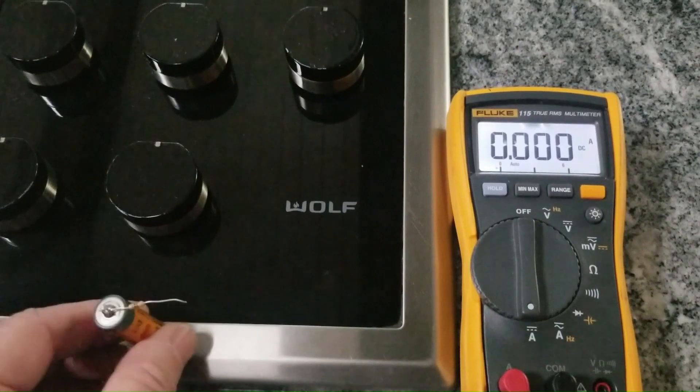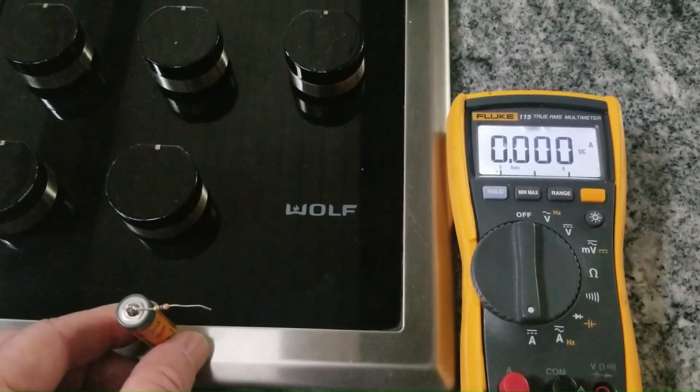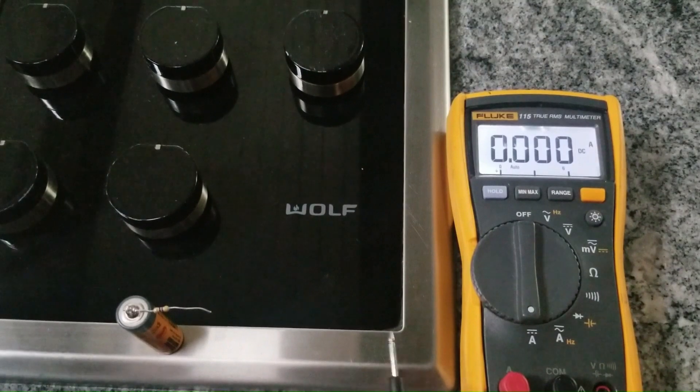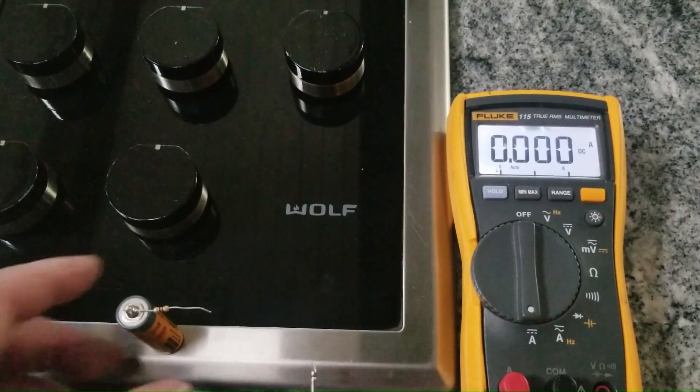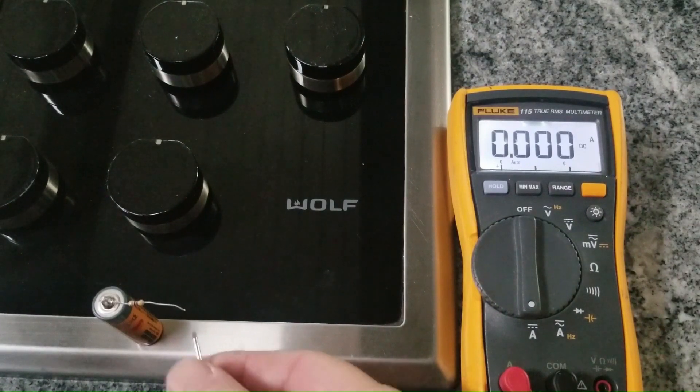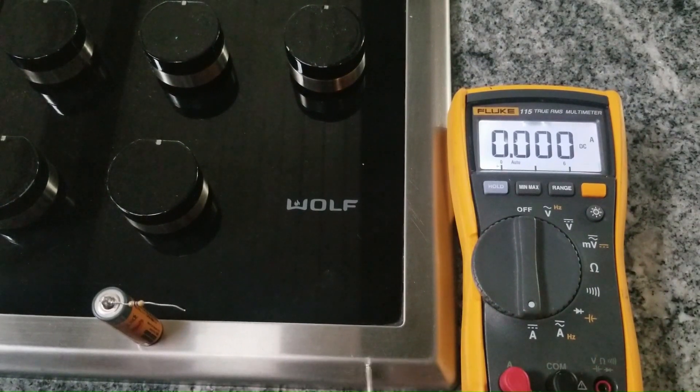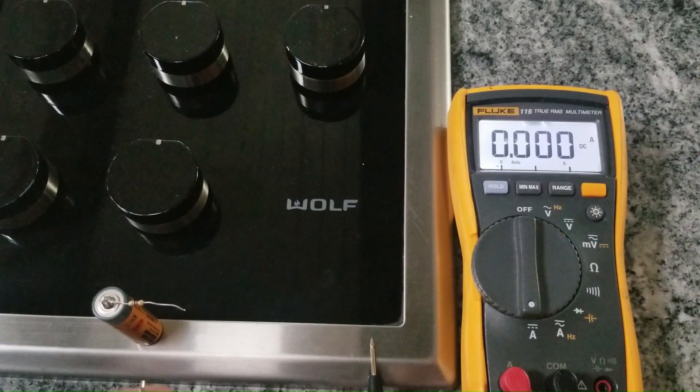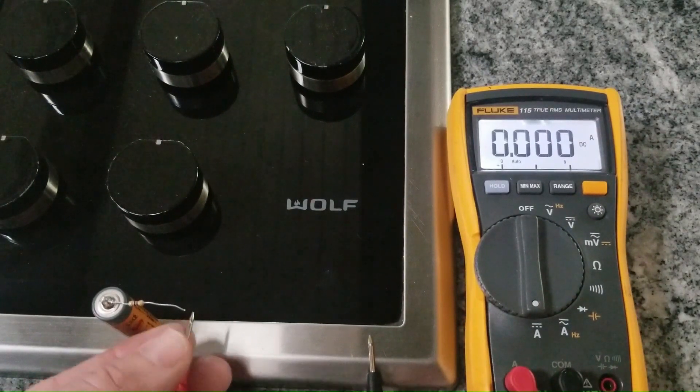Instead, I'm placing this battery on the chassis of a cooktop that is connected on a GFCI circuit. I'm going to pass this current through the chassis. One side of the battery is connected to the chassis, and the other side through this resistor, and I'm going to place this lead on the chassis, and current is going to flow into the chassis.